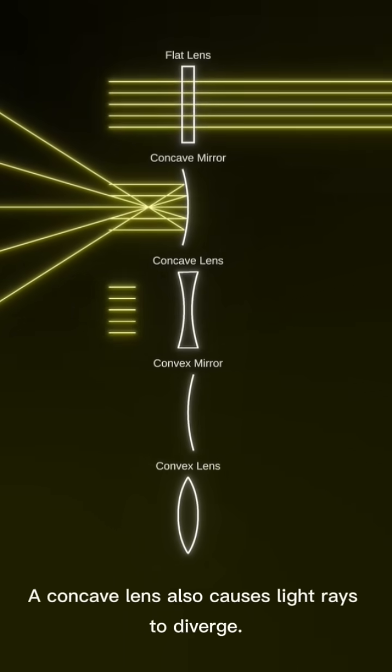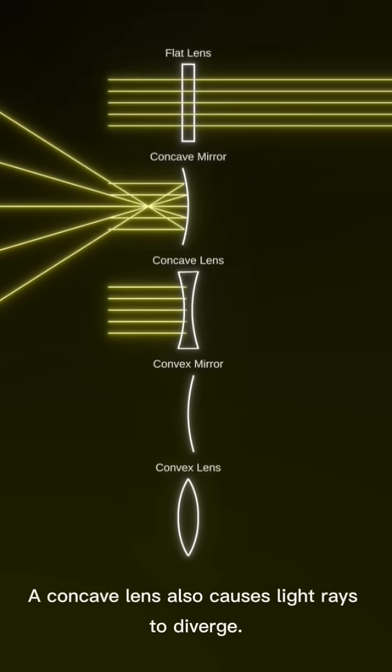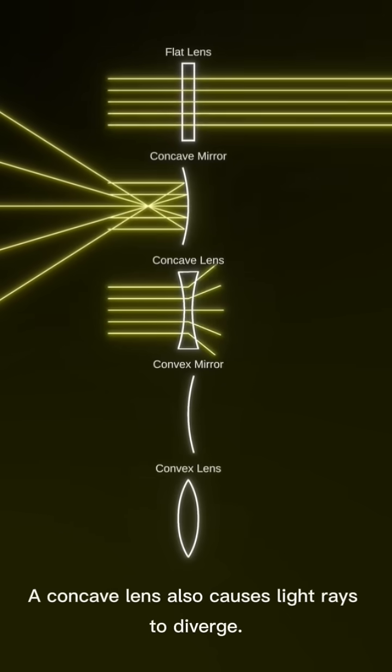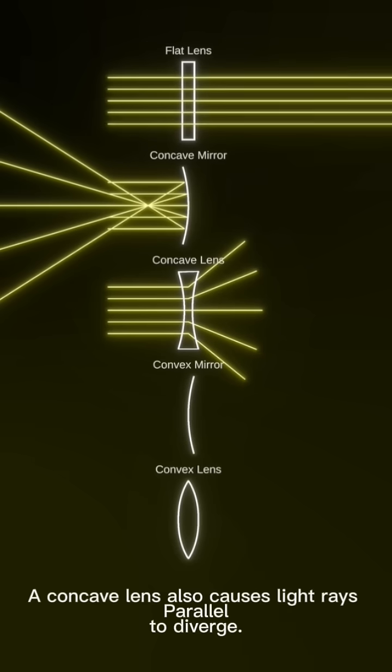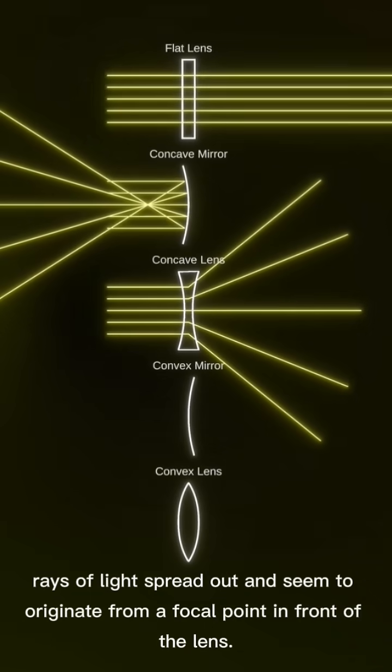Concave Lens. A concave lens also causes light rays to diverge. Rays of light spread out and seem to originate from a focal point in front of the lens.